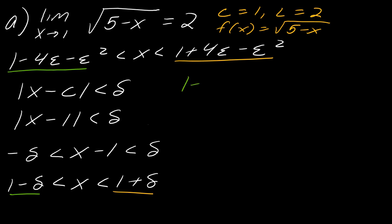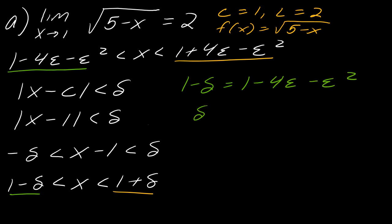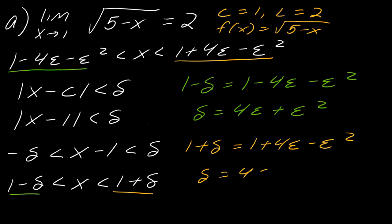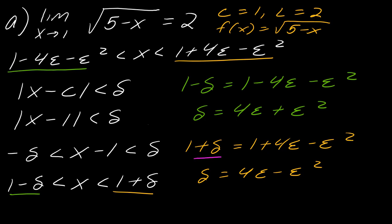So I have 1 minus delta equals 1 minus 4 epsilon minus epsilon squared. Solving for delta gives me delta equals 4 epsilon plus epsilon squared. Then in the golden color: 1 plus delta equals 1 plus 4 epsilon minus epsilon squared, so delta equals 4 epsilon minus epsilon squared. When you get different deltas, you have to figure out which one corresponds with the precise definition — it's always the smaller of the two. Since epsilon is greater than zero, 4 epsilon minus epsilon squared is smaller. So that is the delta we're looking for — that's our answer for this problem.